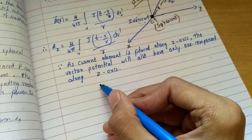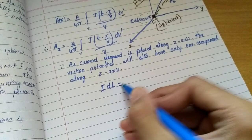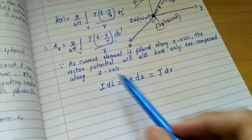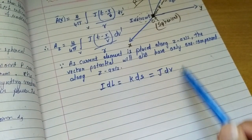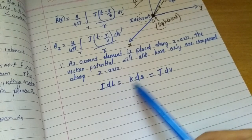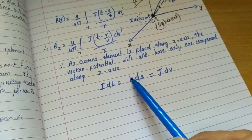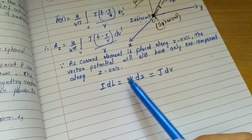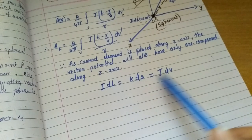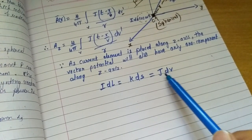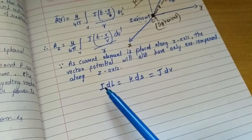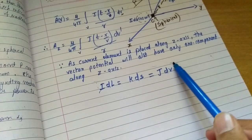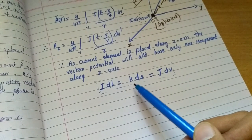Now, we know that I·dL equals K·dS equals J·dV, where K is the surface current density — current per unit length — and J is the volume current density — current per unit area. So current per unit area times volume gives dimensions of current times length, which is the same as I·dL. This is how the current element can be represented in these equivalent forms.